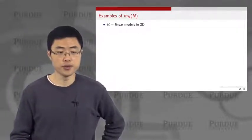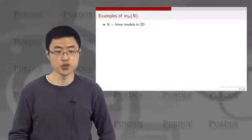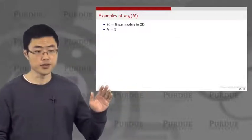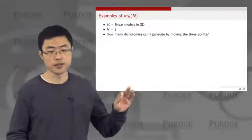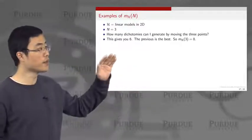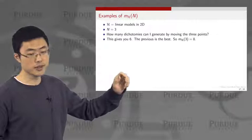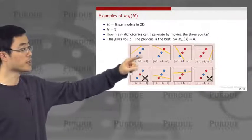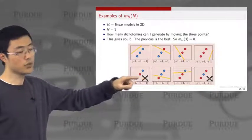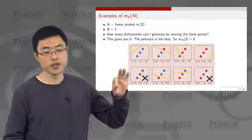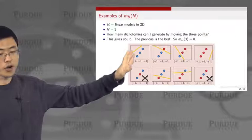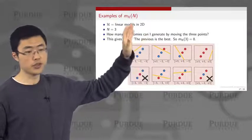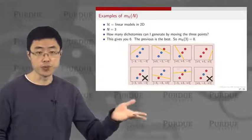What happens if your model — your hypothesis set — is still a 2D linear model, but now the number of training samples is also three? Is it the worst case? This is the situation where you have six cases that are allowed and two cases that are not allowed. So if you choose a configuration like this, you have six dichotomies. Is it the best? No, because the previous configuration is still three samples and still a linear model that can give you eight — therefore the previous one is the best.